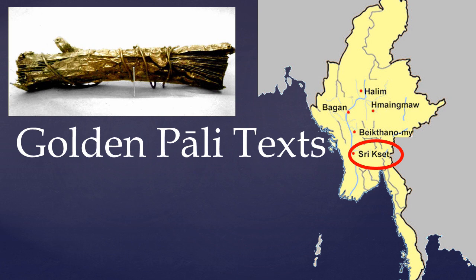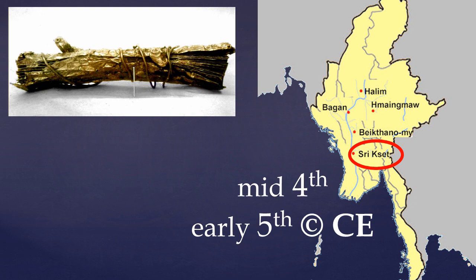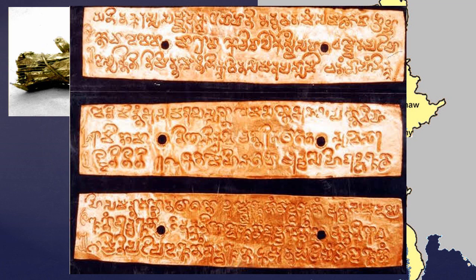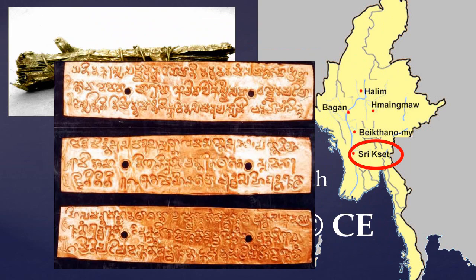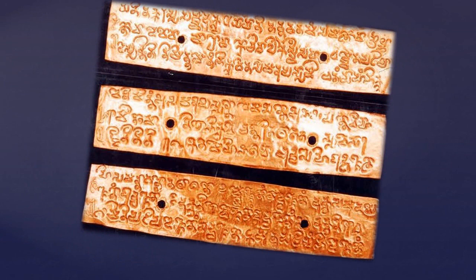I believe that they've now been dated to the mid 4th or early 5th centuries. Interestingly, these are in a script which is similar to the Brahmi script of mainland India, which suggests that early Buddhist influence came from mainland India rather than from Sri Lanka. And that's where the archaeological evidence ends. We only have physical evidence for the existence of Pali dating back to the 4th or 5th centuries.